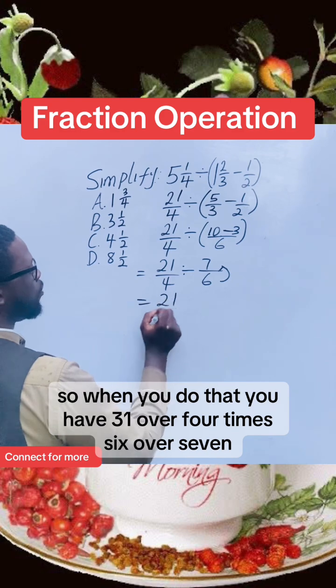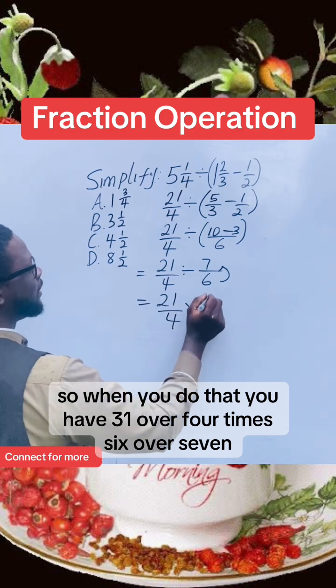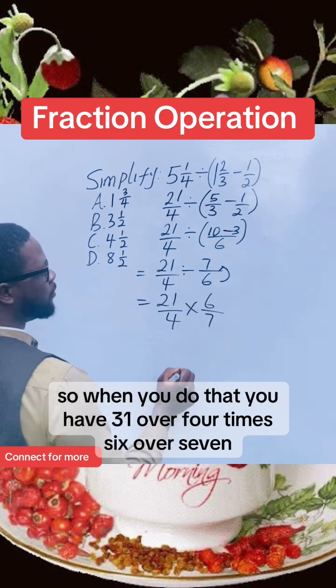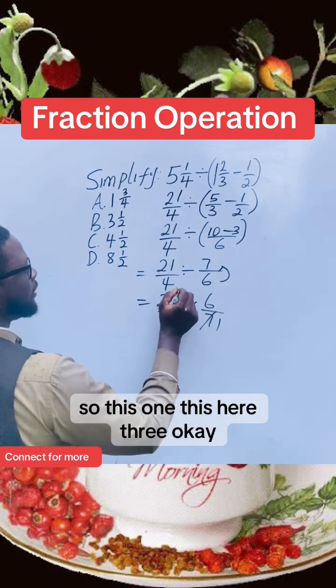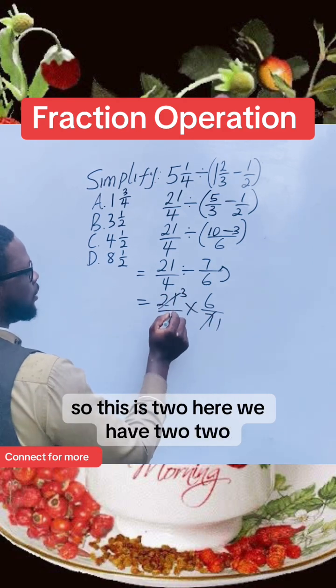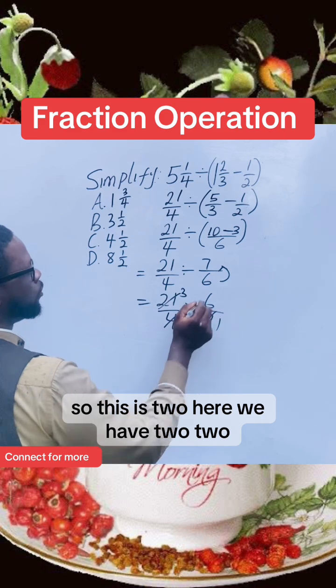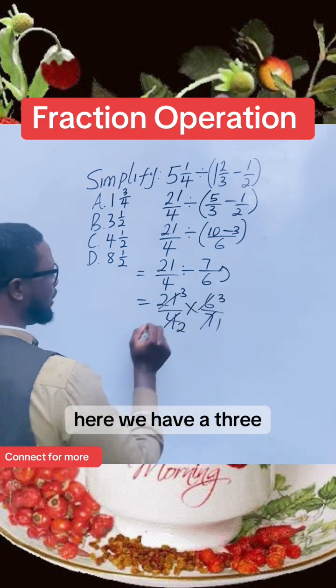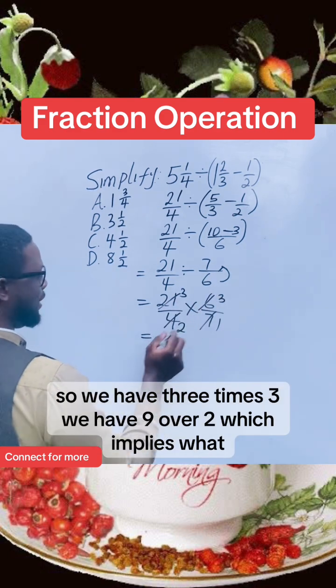So this one here, three. This is two here. We have two, and here we have three. So three times three, we have 9/2.